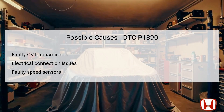For the P1890 Error Code, several underlying causes could contribute to the malfunction. A common reason is a faulty CVT transmission, which may have internal damage or defective components that prevent it from performing correctly. Additionally, electrical connection issues can arise, such as corroded, damaged, or loose connectors, that disrupt the transmission of speed data to the vehicle's onboard computer. Faulty speed sensors are another possible cause — if these sensors misread the vehicle's actual speed, it could trigger the P1890 Code. Thorough examination and diagnosis of the CVT system and its components is essential for resolving the error efficiently, and proper identification of these issues will also assist in minimizing further damage and repair costs.